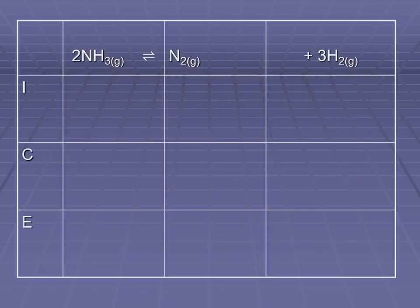For ammonia: initial concentration is 2 moles per liter. Since nothing was said about the products, we assume their initial concentrations are zero. The equilibrium concentration of ammonia is given as 1 mole per liter. Clearly, the change is ammonia going down by 1 mole per liter. With a 2-to-1 mole ratio, and since there are no products initially, we're going to have to produce some products before reaching equilibrium.